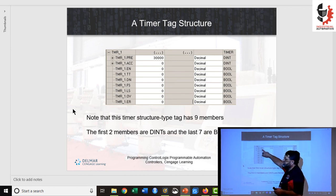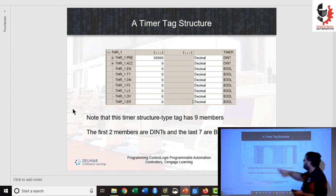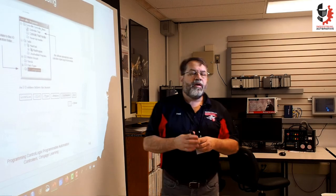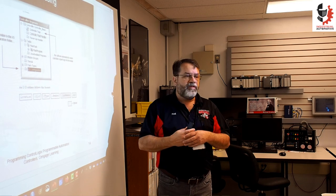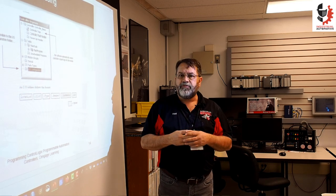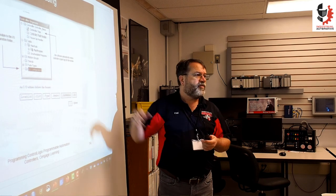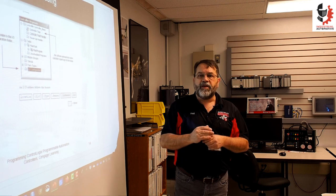ACC is the timer accumulation. There's also Enable, Timer Timing, and DN — the timer done bit. When the timer finishes, the done bit goes high, indicating the timer is finished, and you can use that information elsewhere in your program. I'm going to end this video now and start a new video where I use Studio 5000 to demonstrate the different tags. It's a lot easier to see when actually using Studio 5000 rather than PowerPoint slides. Tune in to the next video and have a look at addressing. Thank you.